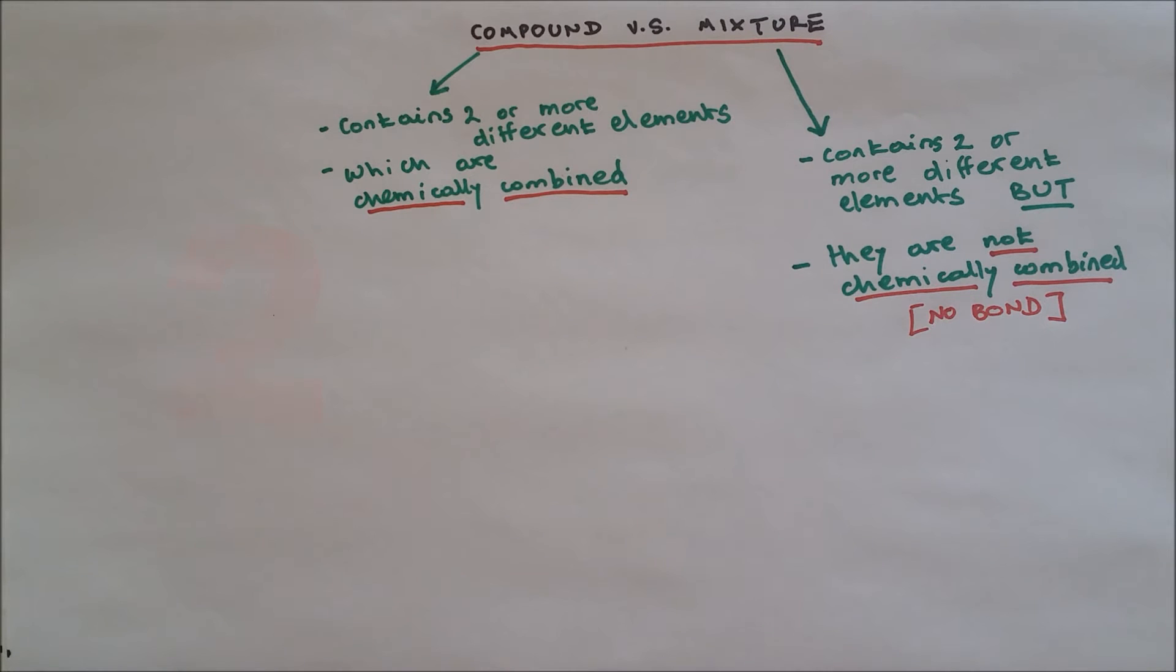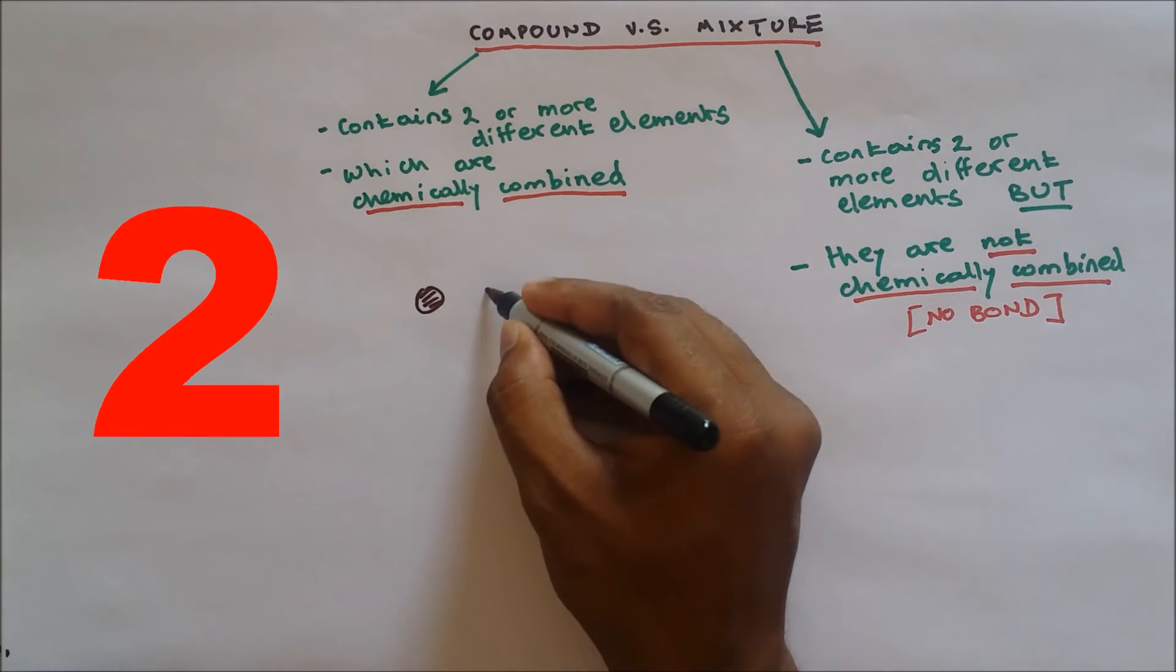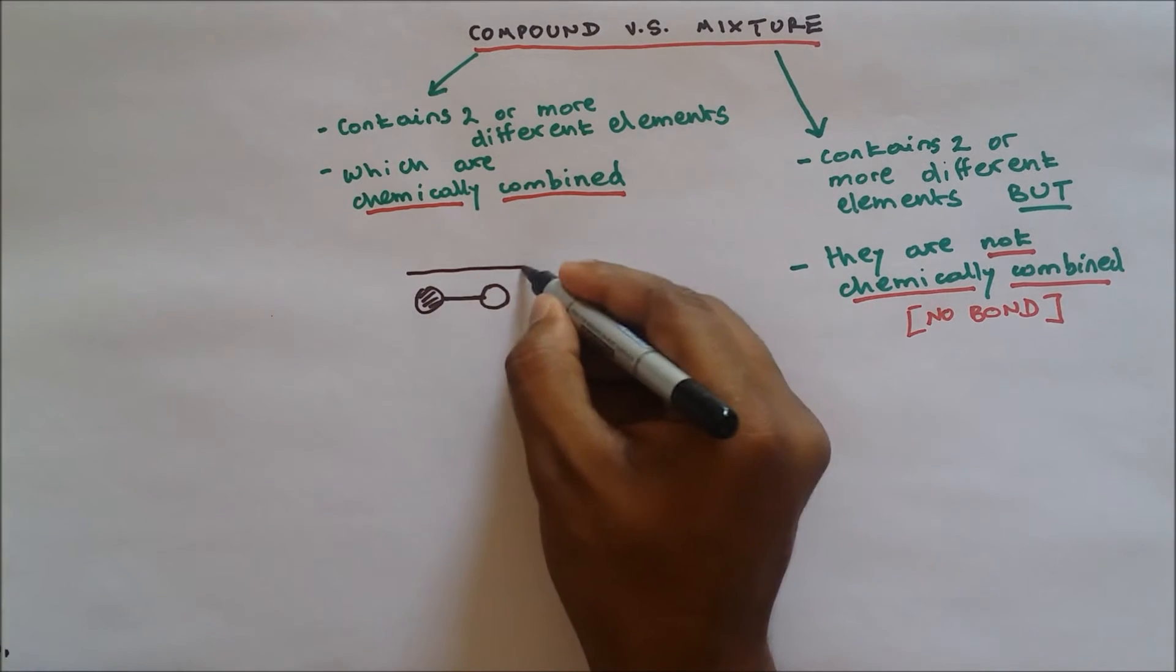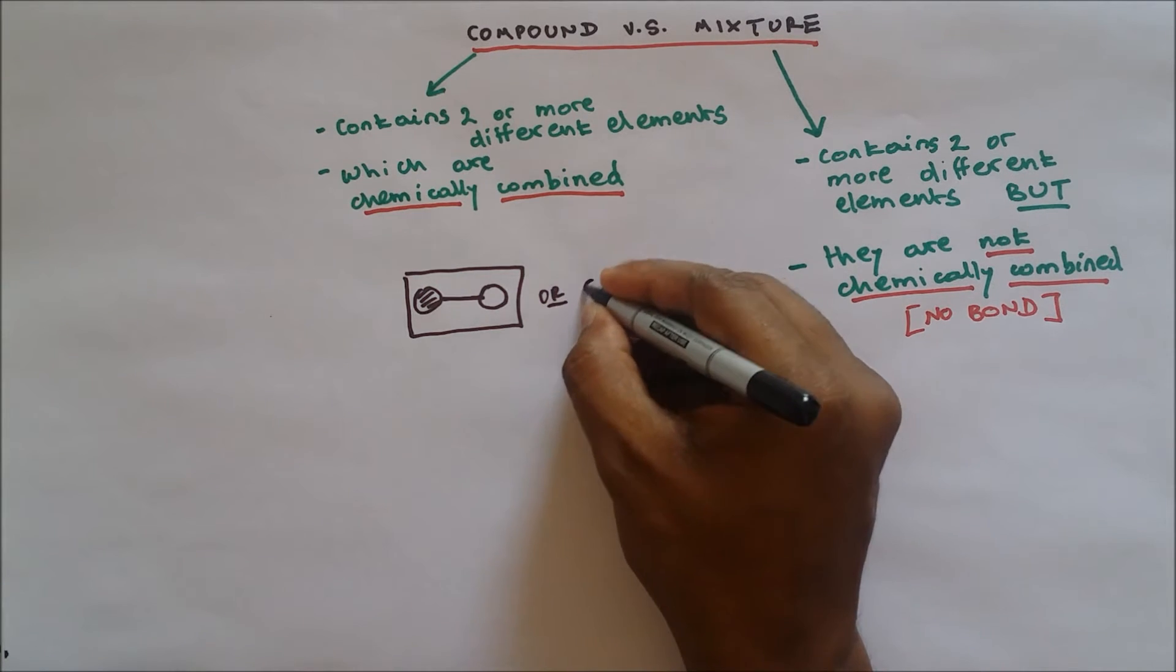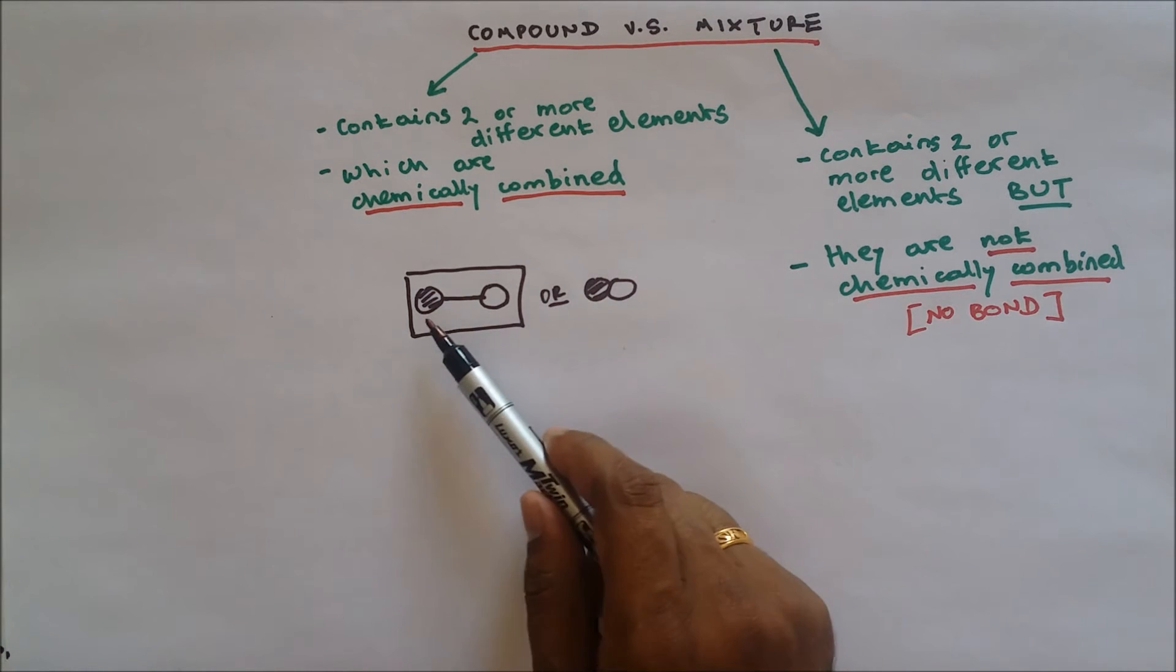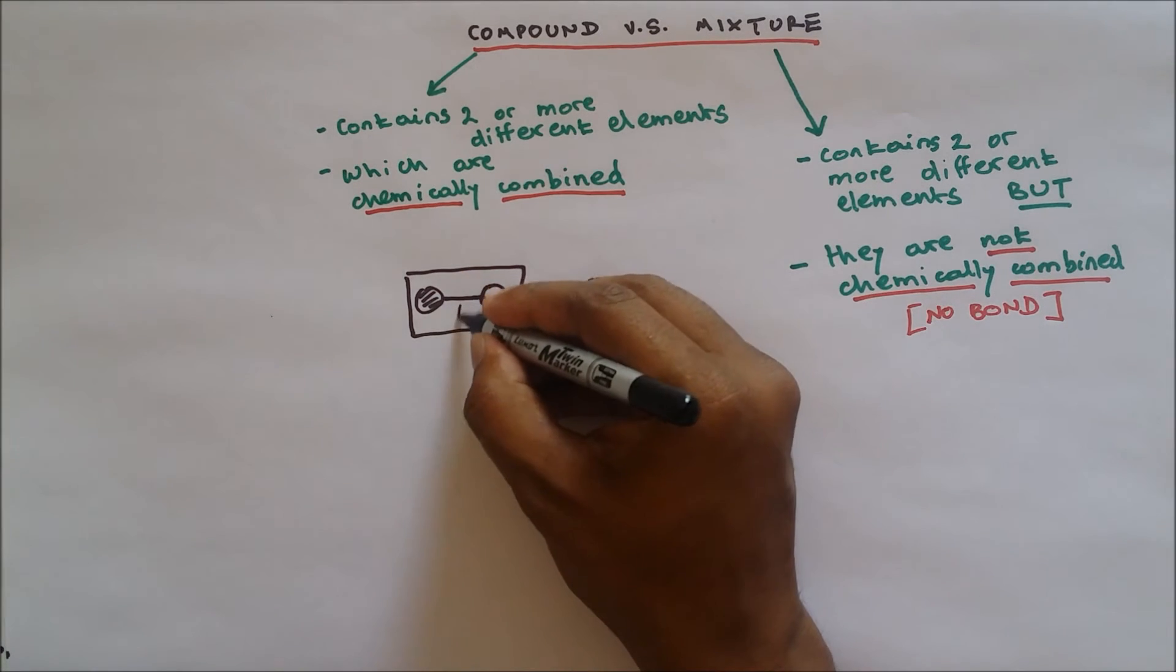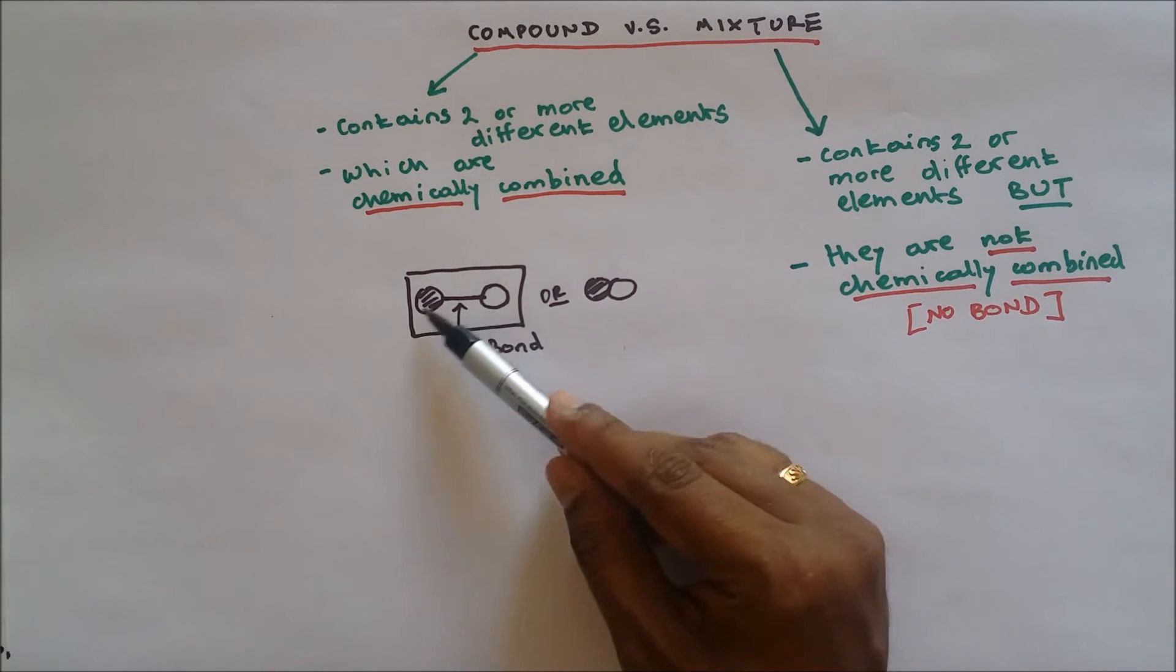If we take a look at compound, we have two different particles and they are chemically combined. Or we could just draw like this. So two different elements or atoms and they are chemically combined. This is bond linking the two different atoms together.